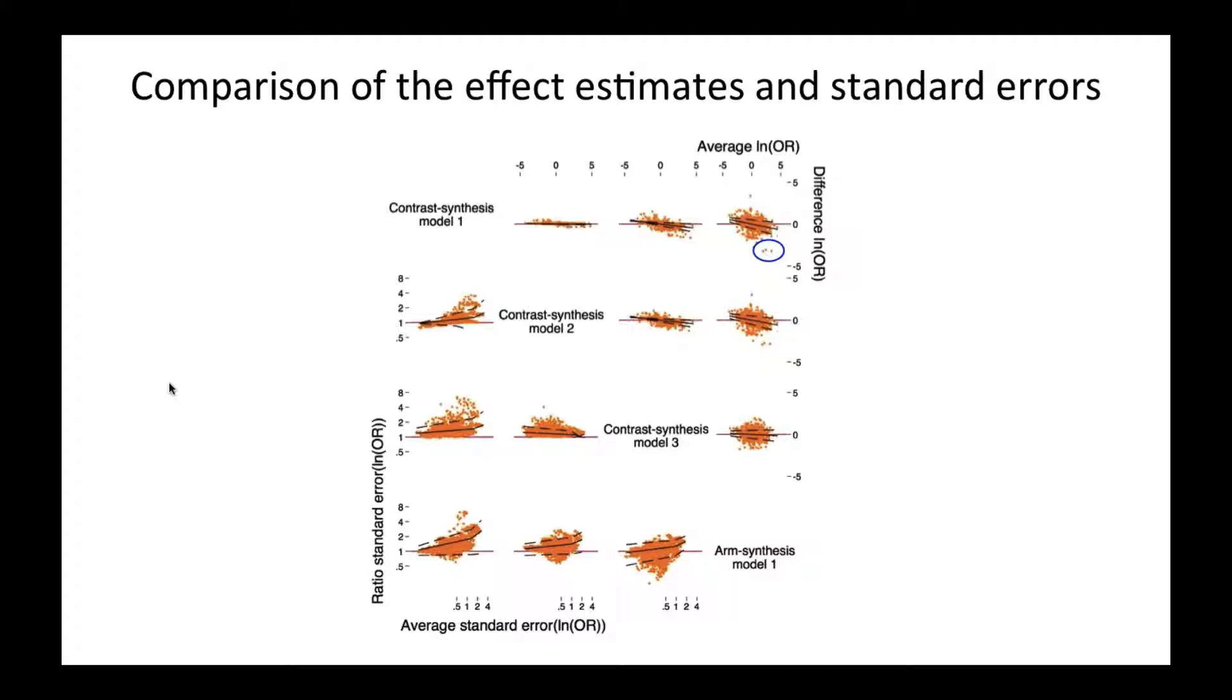If we look at the three points that I've just highlighted in blue, these stood out to me as somewhat outliers in these Bland-Altman plots. These three points actually come from a single network. This is a network of 8 treatments, 1 placebo treatment and 7 non-placebo treatments. It's of 18 studies looking at oral corticosteroid sparing for the elimination of chronic asthma.